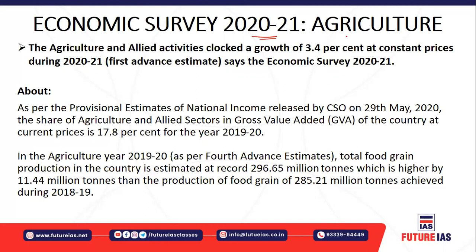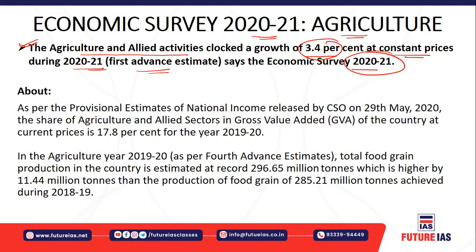Let's begin with agriculture. Agriculture and allied activities is a sector where both farming and allied activities are involved. The Economic Survey says that agriculture and allied sector has a growth rate of 3.4% at constant prices during 2020-21, based on the first advanced estimate.